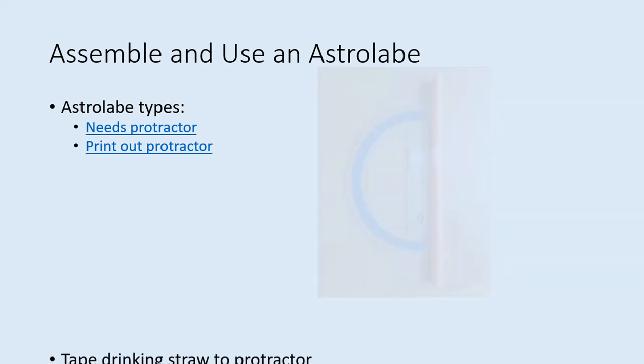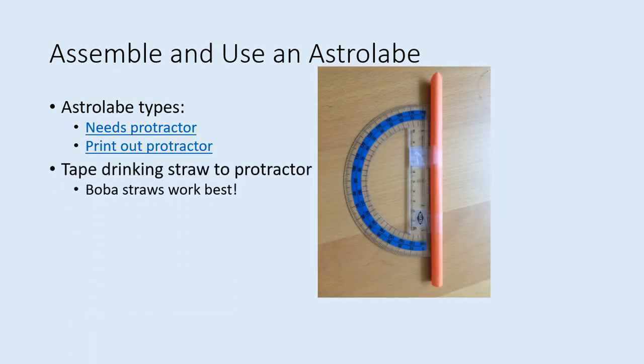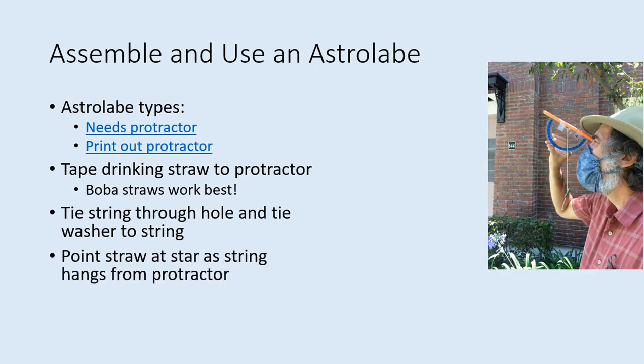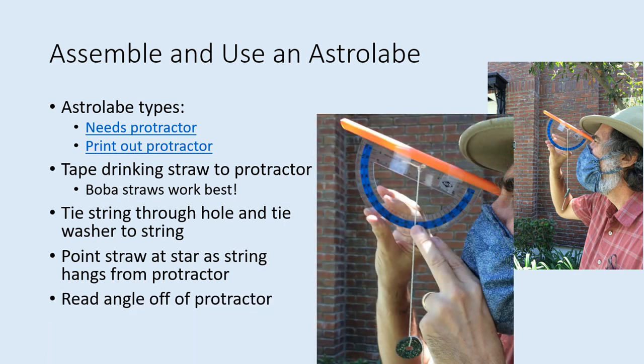Starting with the protractor, tape a drinking straw to the straight side. Then put a string through the hole and tie a weight like a washer on the string. To use the astrolabe, just point the straw at a bright star and look through it so that it's lined up on the star. Let the string hang down and mark what angle it is lined up with on the protractor. The angle from the horizon is 90 minus that angle.